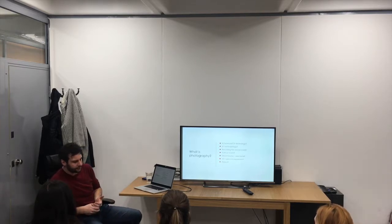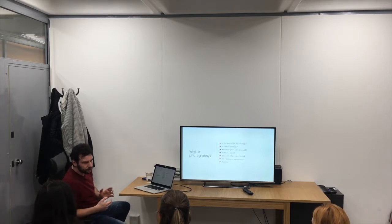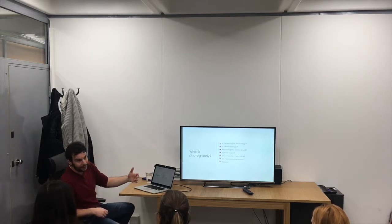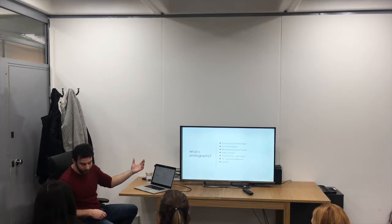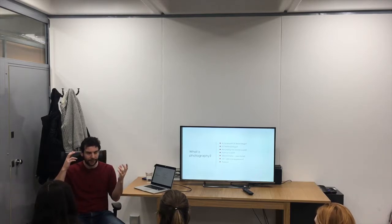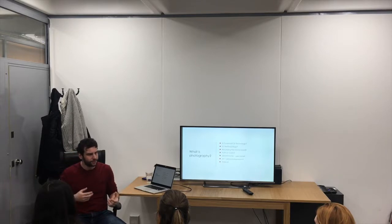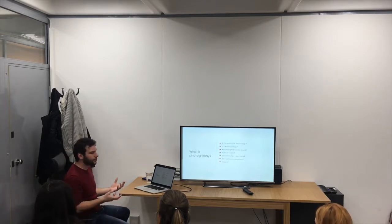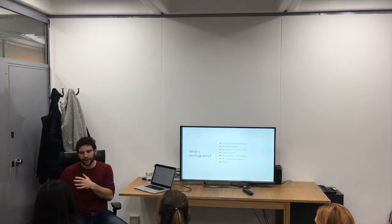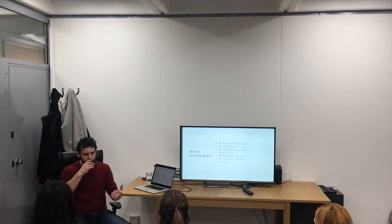Anthropology — since photography was invented, people have used it anthropologically and archaeologically to record buildings and people. It's been used in all sorts of horrible ways anthropologically: to promote ideas of eugenics and biological determinism in terms of body shapes. But it's also been used to record people throughout the world, and for social anthropology — recording the way people act and interact.